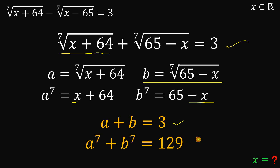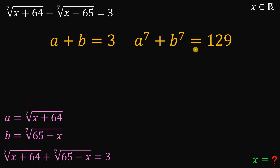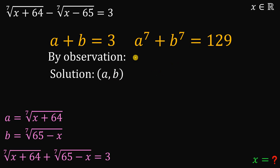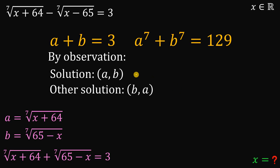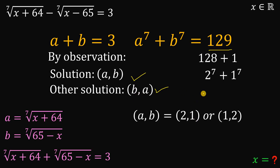Since x is a real number, a and b are also real numbers. By observation, note that 129 is very close to 128, which is 2 raised to the power of 7, and 1 raised to the power of 7 is 1. So one possible pair (a, b) is (2, 1), and by symmetry, the other is (1, 2). But the question is: is this observation sufficient, and is it the only real solution?